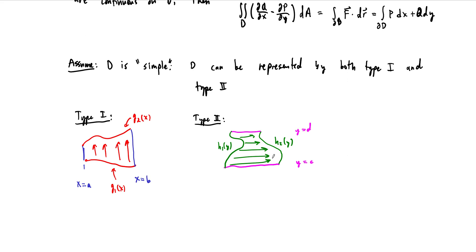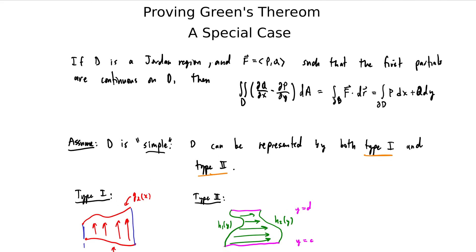If our region D is assumed to be both of these types, you can already imagine it's going to be a simple region — it won't be too exotic looking. We just want to verify this by mathematical proof for at least a special case before we get into examples, and then we'll get into a lot of examples throughout the rest of these notes.